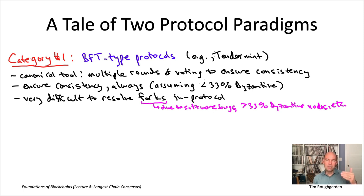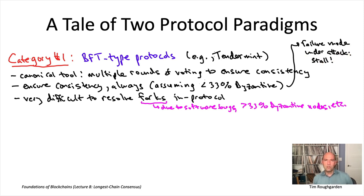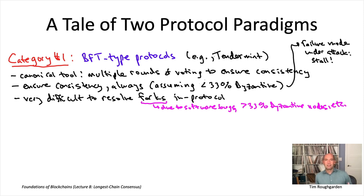One thing to add about ensuring consistency always, assuming less than 33% Byzantine nodes: a consequence of this is that the failure mode for a BFT type protocol like Tendermint is to stall. Whenever you see a popular article about some issue with a BFT type protocol — whether it was a bug or an attack — generally what you'll read is that the blockchain just did nothing, that no transactions were executed for some long period of time, like 20 hours or whatever. You do not, with these protocols, usually hear about transactions getting rolled back or double spend attacks. That's category number one.